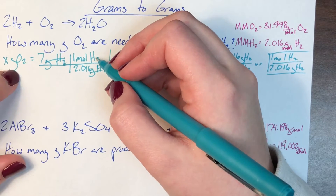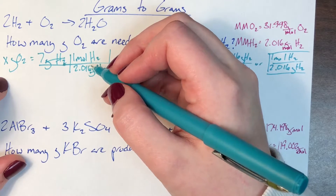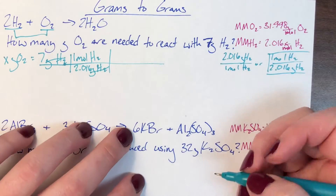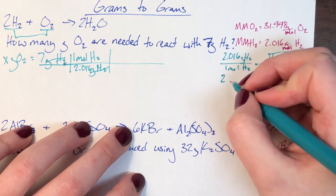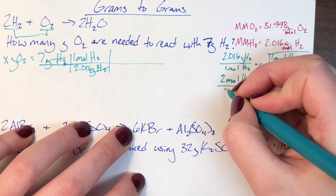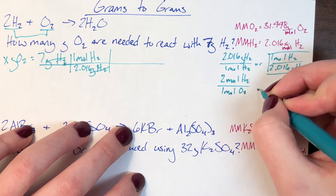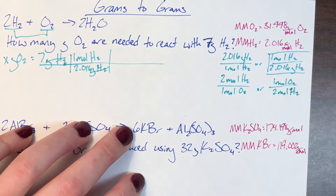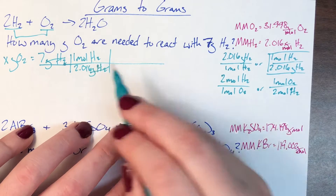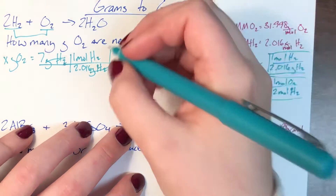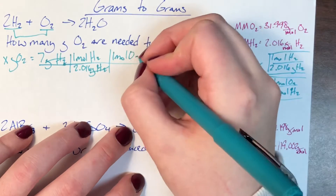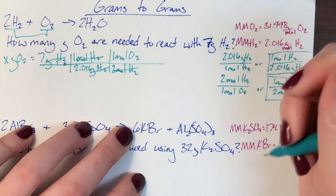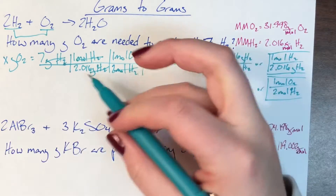Now I'm in moles of H2 but I still want to get to grams of O2, so I need that bridge between hydrogen and oxygen — a mole-to-mole ratio. The coefficient in front of H2 is 2, so for every 2 moles of H2 there is 1 mole of O2, or for every 1 mole of O2 there are 2 moles of H2. I pick the version that cancels moles of H2: 1 mole of O2 over 2 moles of H2.